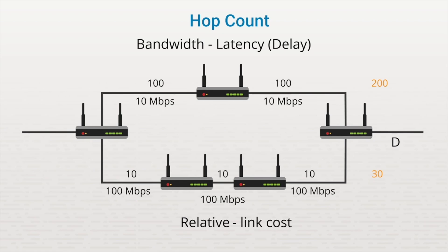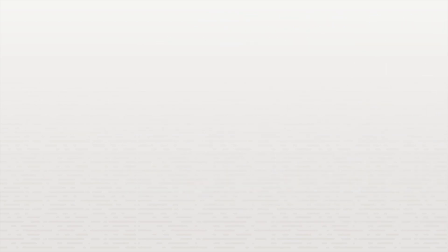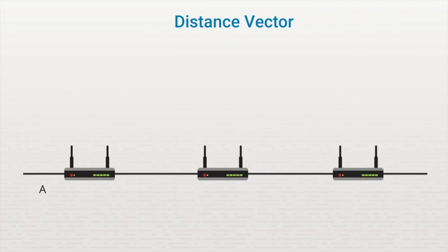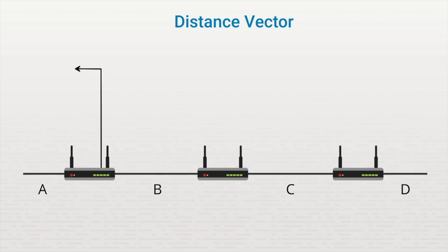Another way to distinguish between routing protocols is the method used to share routing information. The first method is called the distance vector method. With the distance vector method, every router shares its entire routing table with its immediate neighbors. Before the routing protocol starts, each router would have routing table entries for the directly connected networks. The first router would know of networks A and B, this router would know of networks B and C, and this router would know of networks C and D.